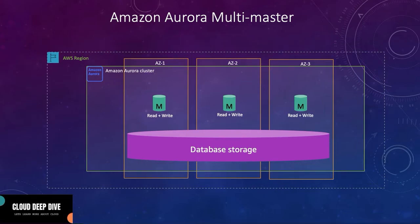In Amazon Aurora Multi-Master, you don't have read replicas. Instead you have the same DB instance which can handle both your write and read queries, and you can have multiple of these. So instead of read replicas, you have multiple read-and-write DB instances which handle both your read and write queries.